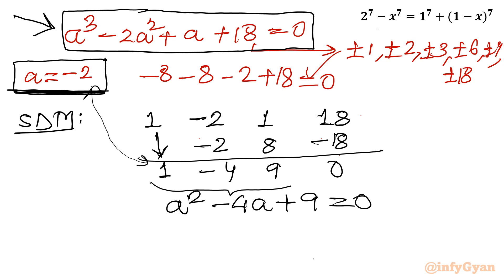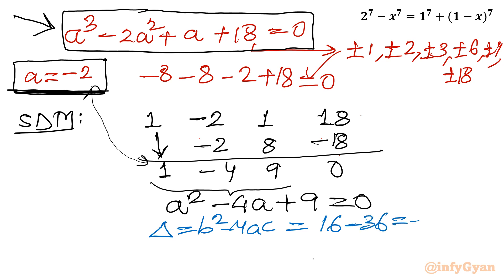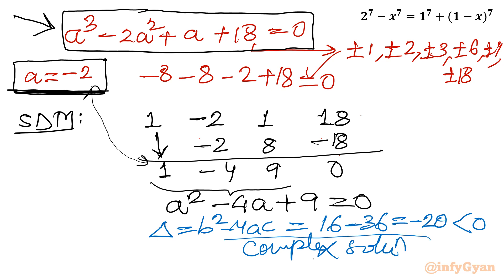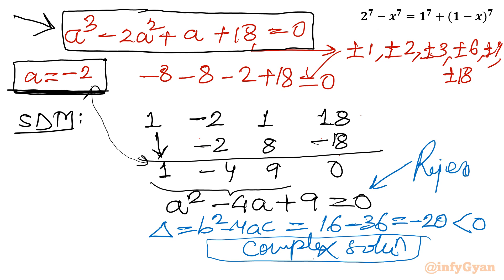Let us check the discriminant of a² minus 4a plus 9 equal to 0. Delta equals b² minus 4ac: (−4)² minus 4(1)(9) equals 16 minus 36, which is negative. So this equation generates only complex solutions, which we reject. The only accepted solution is a equal to minus 2.